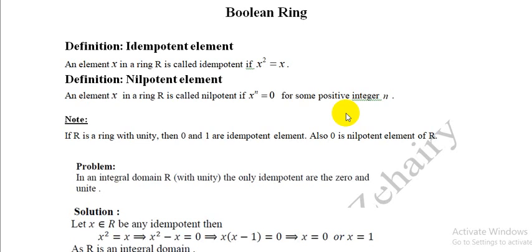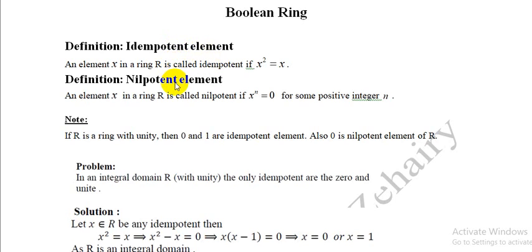As-salamu alaykum. I am Bikub Talab al-A'zaq. Today we will be talking about boolean rings and we will explain what the boolean ring means. A boolean ring is a type of ring. Before we define and explain the boolean ring, we will define some important definitions.